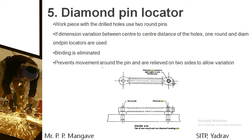Next is a diamond pin locator. When you are machining workpieces with two different holes — if the dimension between the two holes varies across different workpieces — you can use a diamond pin locator. A diamond pin locator is used when the distance between two holes of the same workpiece varies from piece to piece. For example, if you are preparing a ring spanner, you have to locate the two centers or two edges of the spanner to completely machine the upper surface. Whenever there are variations between the two holes, you can use a diamond pin locator.